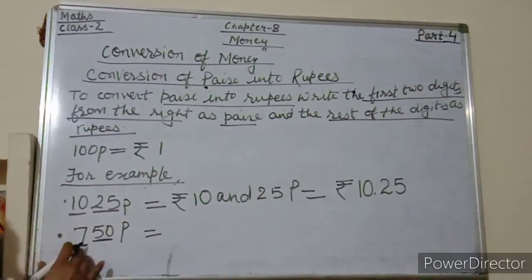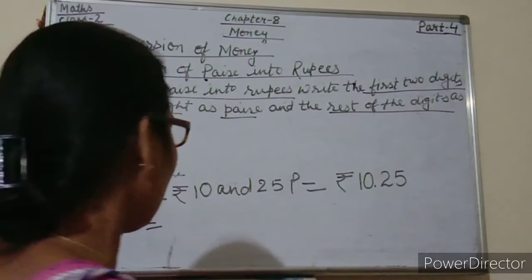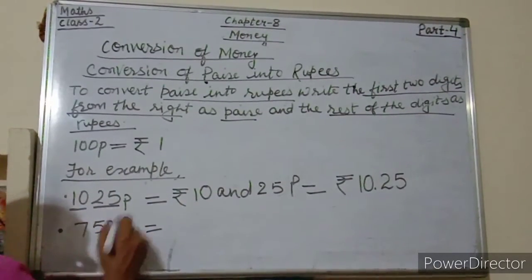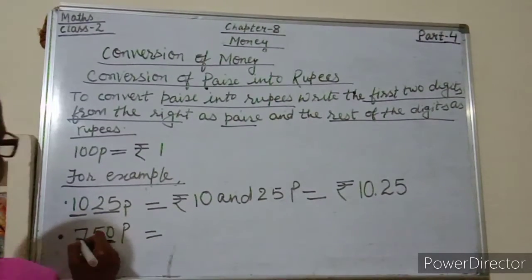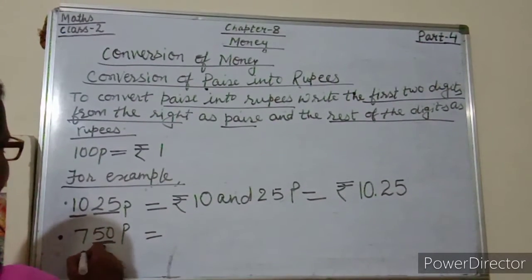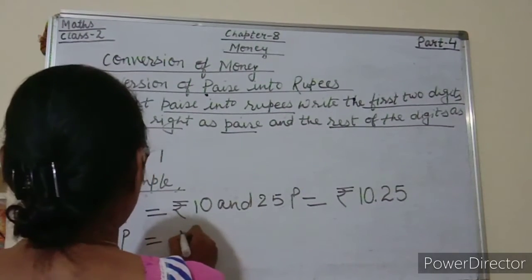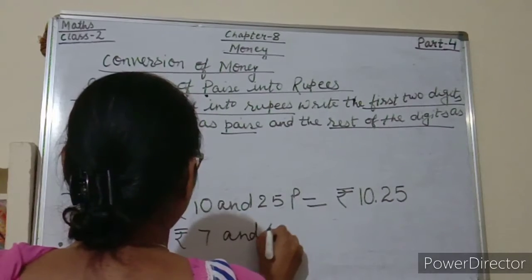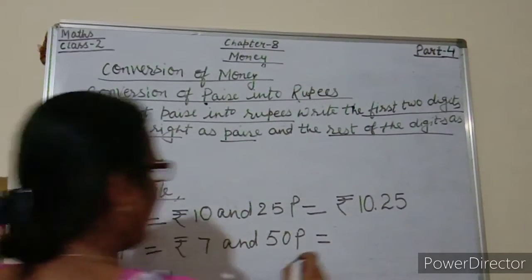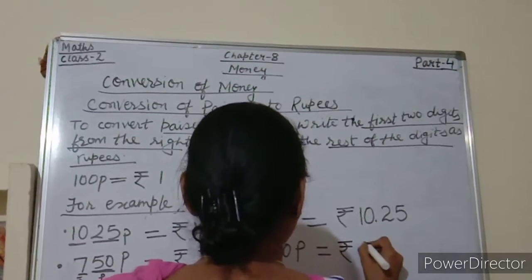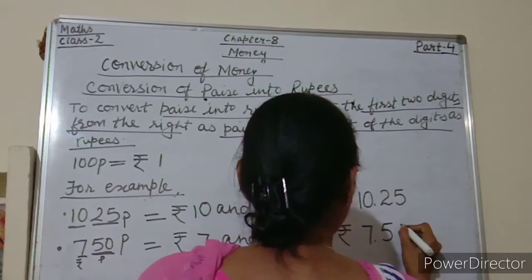Now the next one is 750 paise. We will do the same process. Write the first two digits from the right as paise, and the rest of the digit as rupees. So here we write 7 rupees and put a dot to separate paise. So 750 paise is equal to 7 rupees and 50 paise.